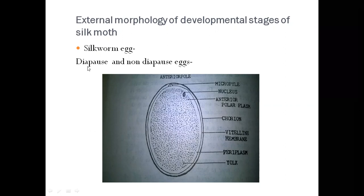Diapause eggs are those in which the embryo stops development at the late gastrula stage. In non-diapause eggs, the egg hatches after the completion of the pre-embryonic period. The silk moth egg is a centrolecithal egg having yolk centrally accumulated. This egg is covered by a chorion, followed by a vitelline membrane and a periplasm. At the end there is a micropyle through which exchange of gases occurs, and the nucleus is at the periphery.